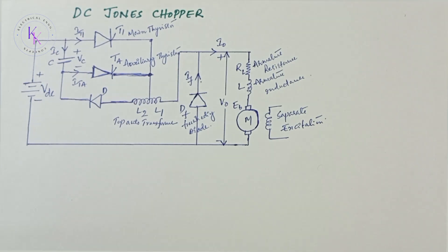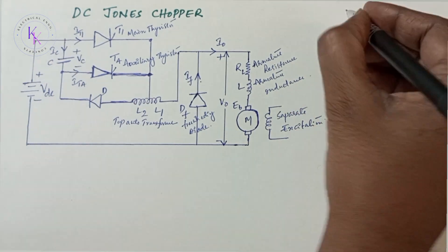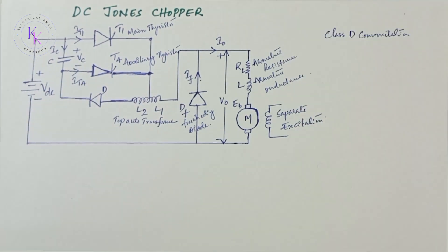This is Jones Chopper. Jones Chopper employs class D commutation to turn off the main thyristor T1. A charged capacitor C is switched by the auxiliary thyristor TA in order to turn off the main thyristor T1.